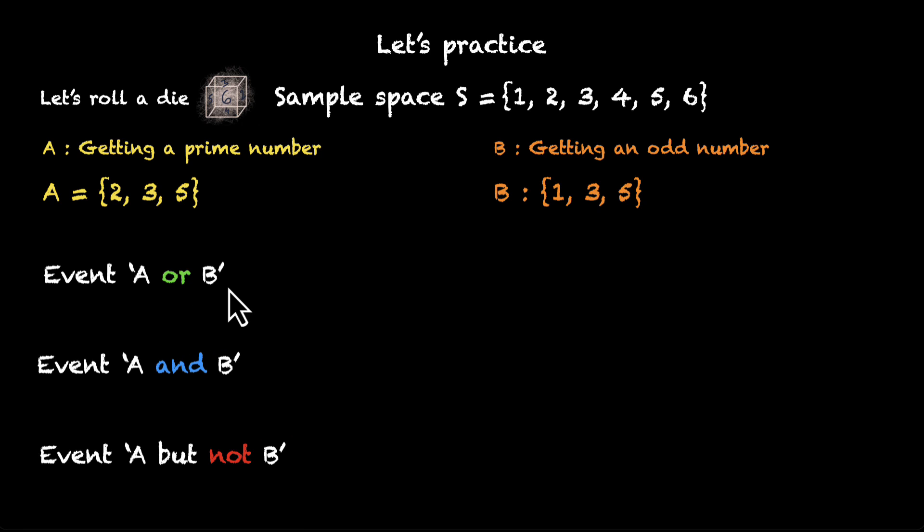Now, let's look at the first one. Event A or B. Now, one way to do this is pick all the elements from one of these sets. Let's say we pick all the elements from set A: 2, 3, and 5. And then let's see what are the elements that are left in B. We'll add them to the list as well. We have 3 and 5 covered, so we'll add 1 to the list, and this will be our event A or B. If any of these sample points happen, if any of these outcomes happen, we can say that event A or B has happened.